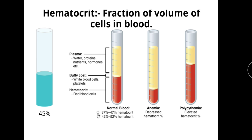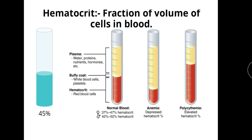The hematocrit, also known as packed cell volume, is the fraction of the volume of cells in the blood. When we centrifuge blood, RBCs settle at the bottom. Above that, a small buffy coat layer is observed containing WBCs and platelets — it is only 1% of total blood volume. The substance filling the upper half of the tube is plasma, which is about 55% of blood volume.